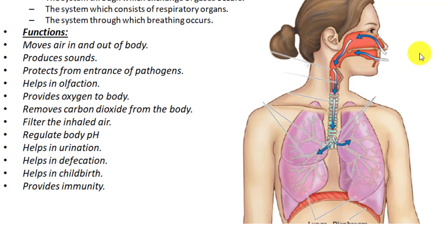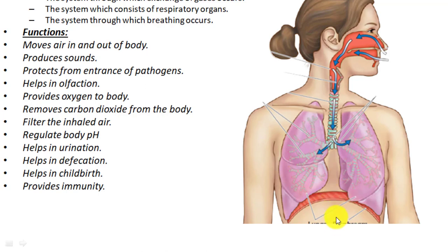The respiratory system also helps in urination. When we urinate, our lungs put pressure on the diaphragm, and the diaphragm puts pressure on the abdominal viscera, and the abdominal viscera put pressure on the urinary bladder to expel urine out of the body. So the respiratory system also helps in the process of urination.